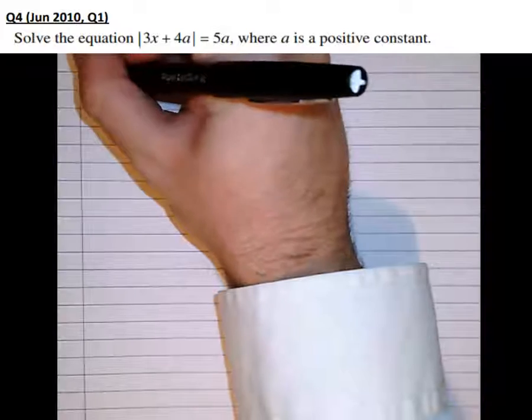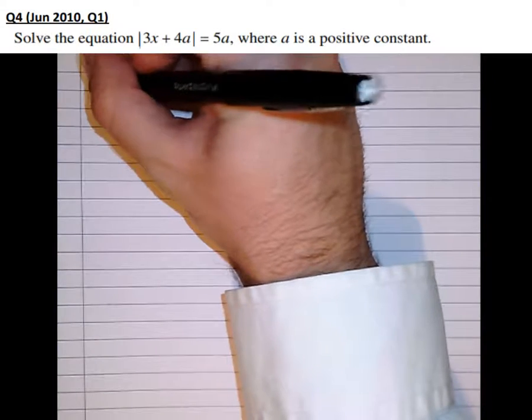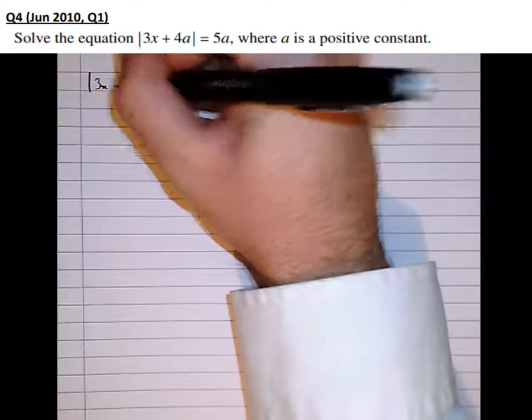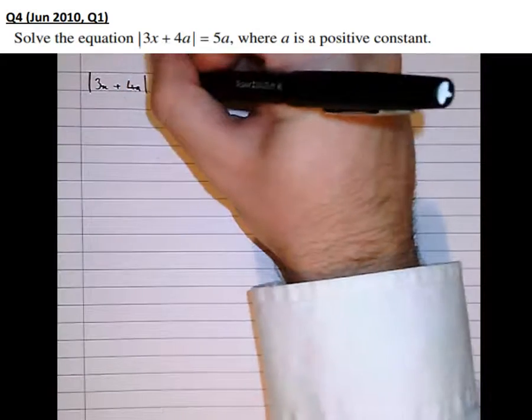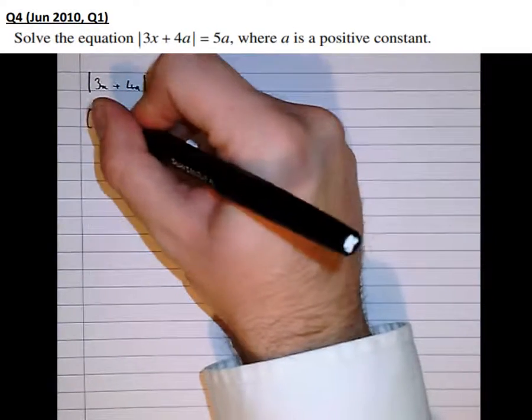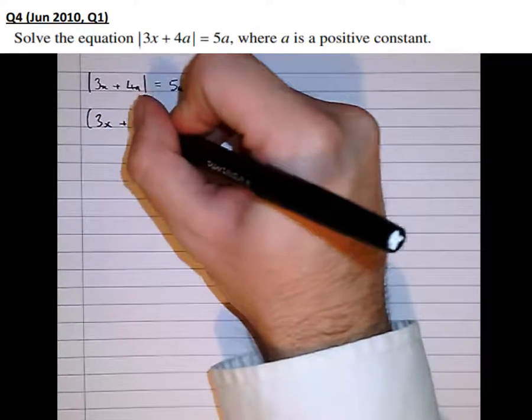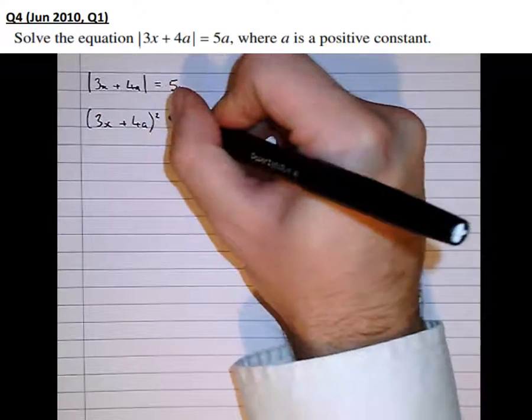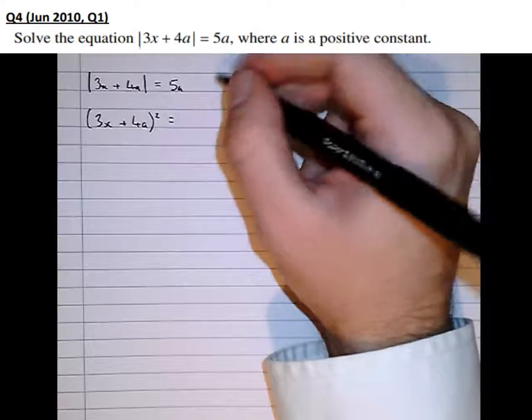Well, first of all, let's try and use the squaring method. Let's try and see why it isn't the best method. So there's the question. So let's square both sides. We get 3x plus 4a squared equals 5a squared.